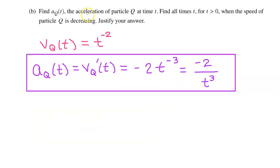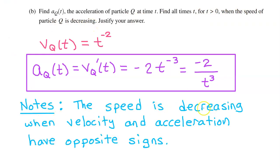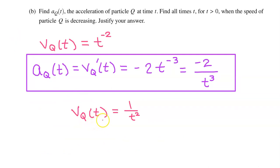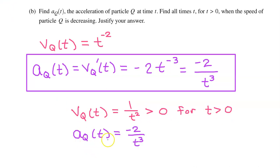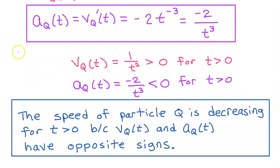That's the answer to the first half of the question, but we still need to find all times t, for t greater than 0, when the speed of particle Q is decreasing. We know that speed is decreasing when velocity and acceleration have opposite signs. The velocity of particle Q is given by 1 over t squared — notice that this is always positive for t greater than 0. We just found that the acceleration of particle Q is given by negative 2 over t cubed. Notice that this expression will be negative for all t greater than 0, because we have a negative divided by a positive, which is a negative. In summary, the speed of particle Q is decreasing for t greater than 0, because velocity and acceleration have opposite signs.